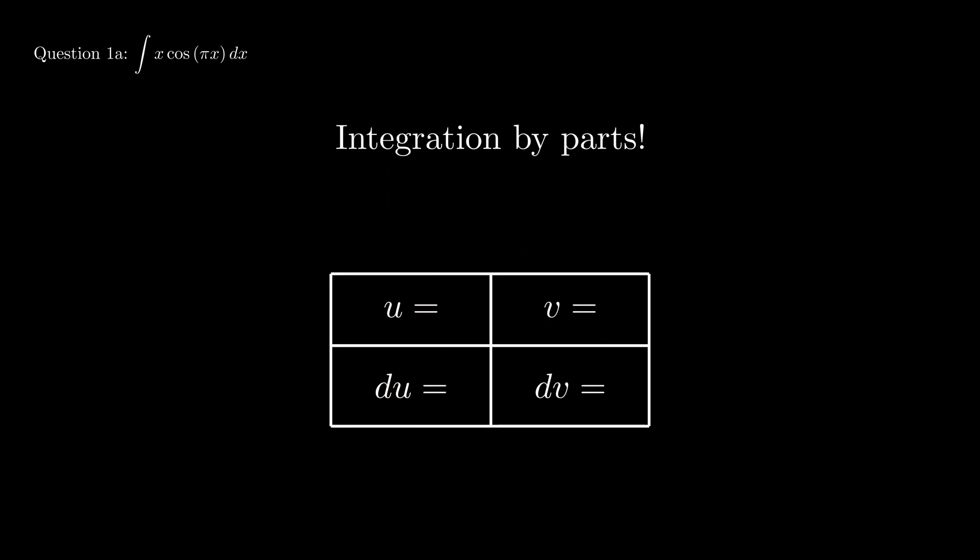Question 1a. Take the integral of x times cosine of pi times x. This question is obviously asking us to use integration by parts. But the only thing remotely difficult about integration by parts is to find out which parts we will need to integrate and which parts we will need to derive. So, here's a reminder of integration by parts.